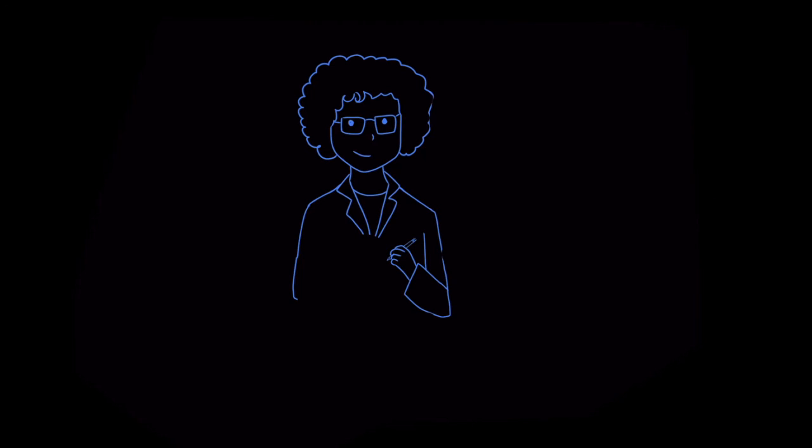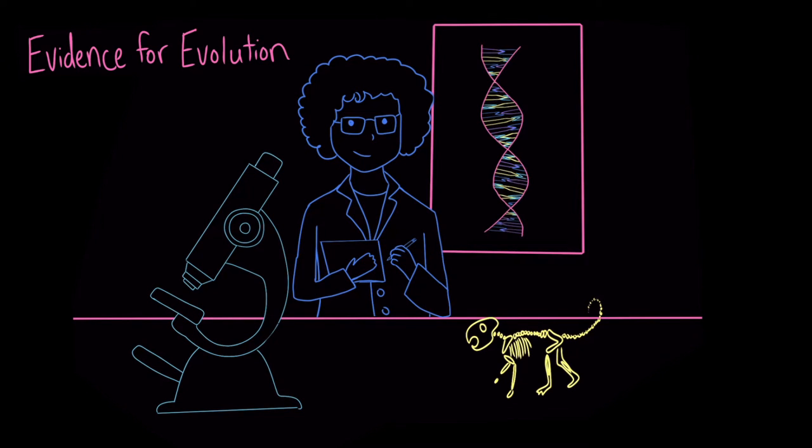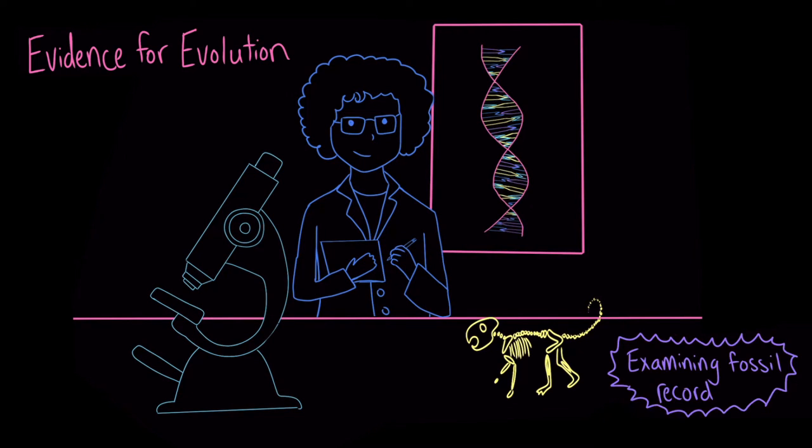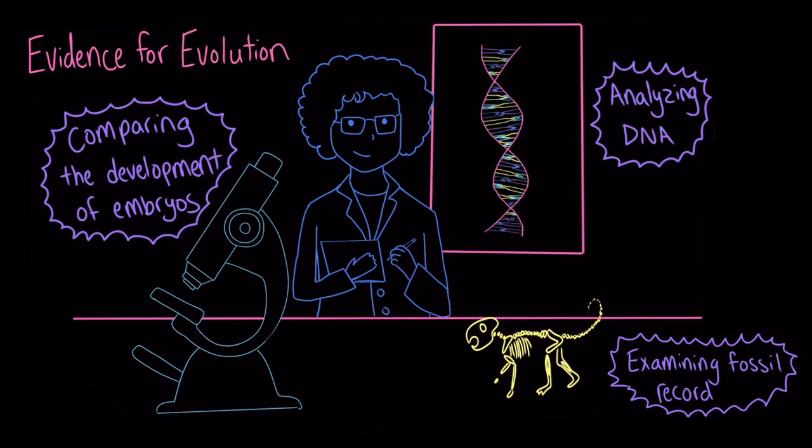Scientists analyze the similarities and differences between species to help figure out how they might be related in evolutionary history. And they found significant evidence for evolution by using a variety of methods, including examining the fossil record, analyzing the DNA of different organisms, and comparing the development of embryos, which are what organisms are called before they're born. However, you don't need a microscope or a fossil to find evidence for evolution.